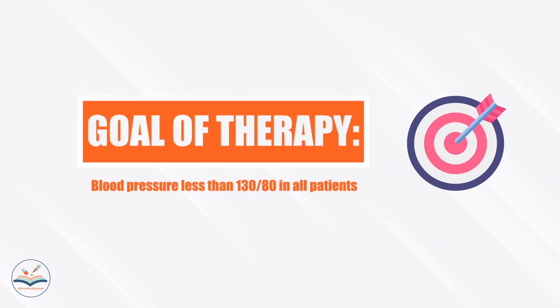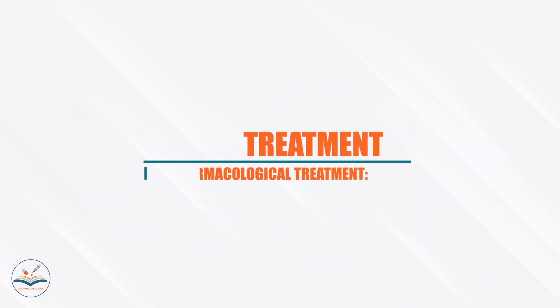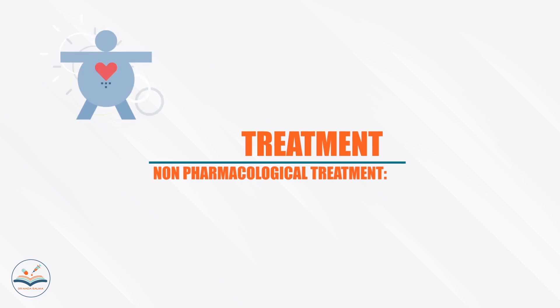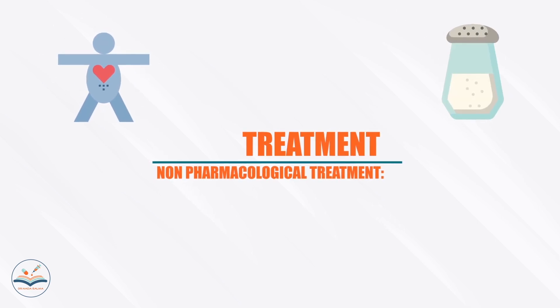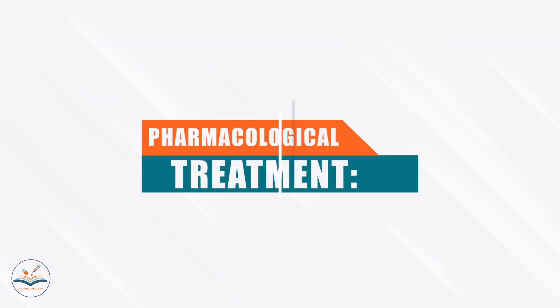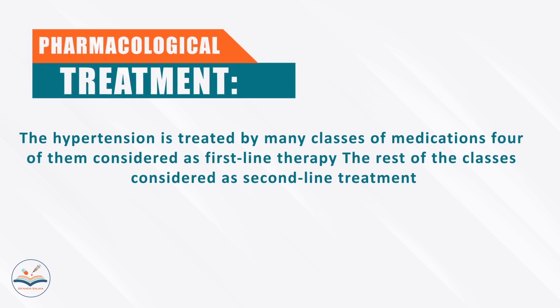The goal of therapy is to maintain blood pressure less than 130 over 80. Treatment is divided into non-pharmacological treatment, such as weight reduction, sodium restriction, aerobic physical activity, and smoking cessation, and pharmacological treatment. Hypertension is treated by many classes of medications; four of them are considered first-line therapy and the rest are considered second-line.